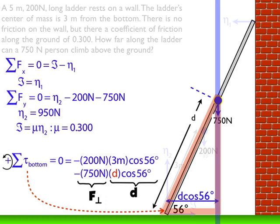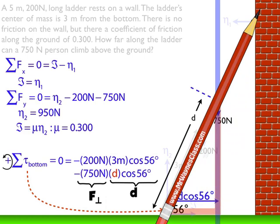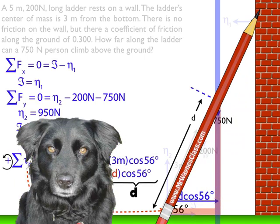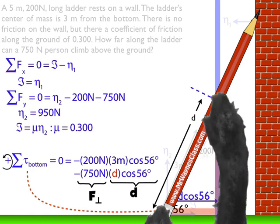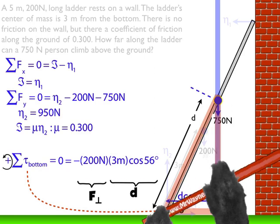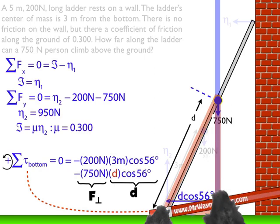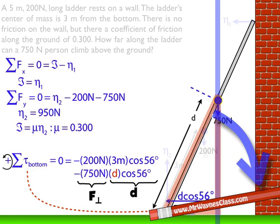It's negative — the sign comes from the pencil test again: place the hand at the fulcrum, reach up to where the 750-Newton force is applied, and move the pencil in the direction of the force. I can see it rotating in a clockwise direction, and that's a negative torque — that's where the negative sign came from.